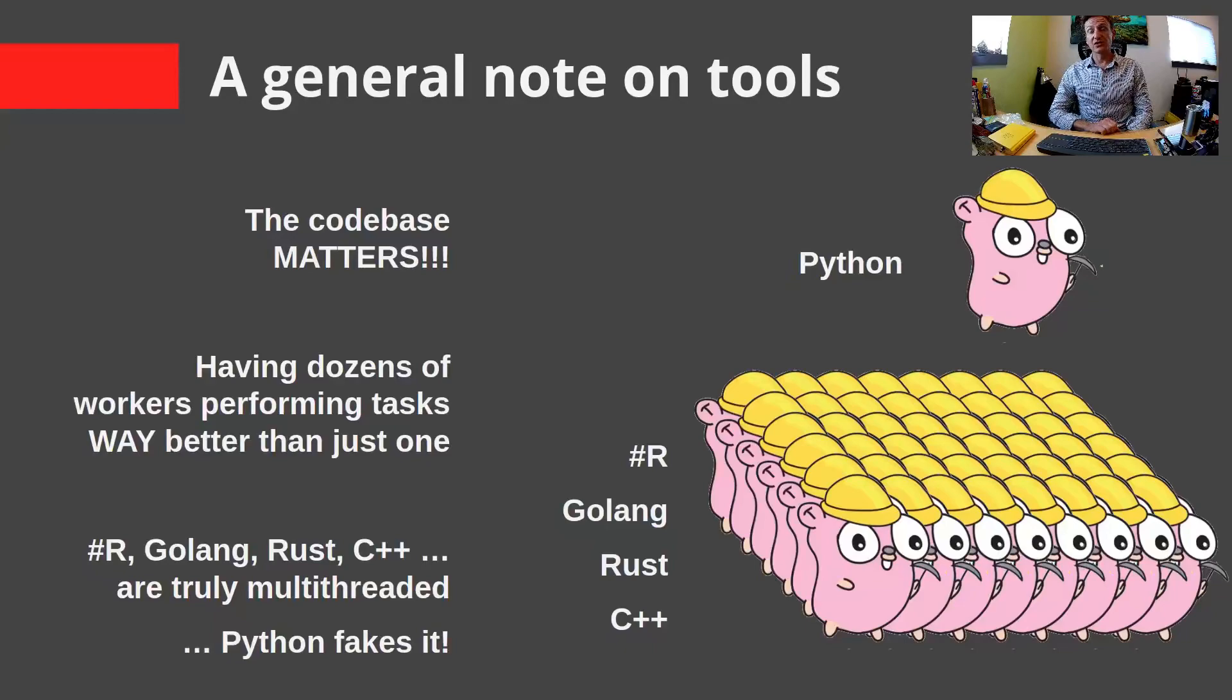A general note on the tools that are going to be used. In general, there is a lot of different code bases that can be used to run machine learning, deep learning models. However, there are some differences among the code bases, and that matters. So, for example, shown on this slide, you can have one gopher running around hitting stuff with a rock hammer, and that's one gopher doing work. But many of these languages have learned to utilize all of the CPUs or all of the RAM that's available so that you can have any n number of gophers running around and doing work. So you can accomplish tasks faster.